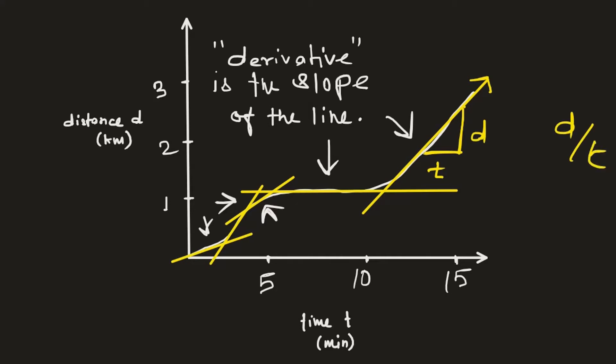Distance divided by time is the formula for speed. So the value of these slopes represents your speed within different time intervals — for example, the bottom slope represents your warm-up speed, the second slope where your speed increased, the third slope where you started slowing down, and the flat slope representing zero speed when you traveled no distance.